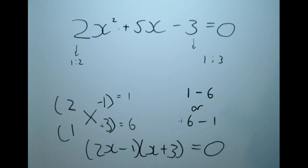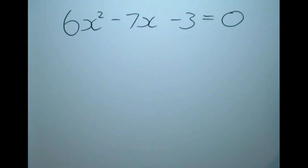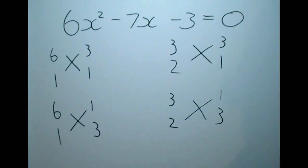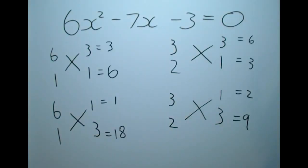Now let's look at an example where we have more than two possible combinations of factors. Consider 6x squared minus 7x minus 3 equals 0. We need to consider factors of 6 and factors of 3 that will give the middle number. There are four possible combinations: factor combination 6 and 1 paired with 3 and 1; 6 and 1 with 1 and 3; 3 and 2 with 3 and 1; or 3 and 2 with 1 and 3. We will find out which one works by doing the cross multiplication.